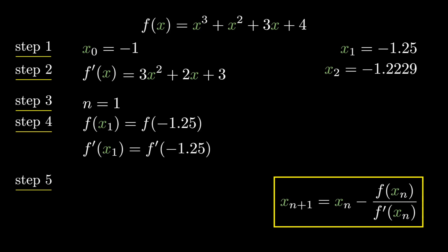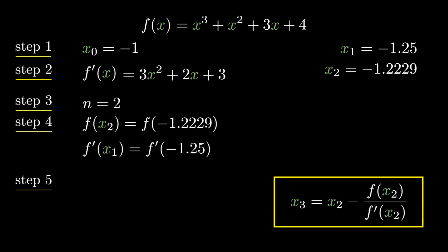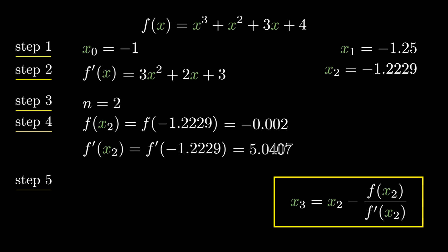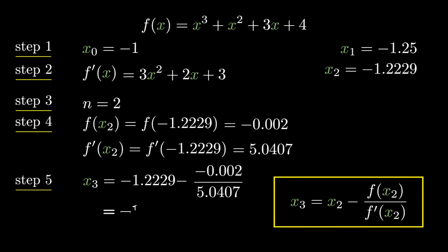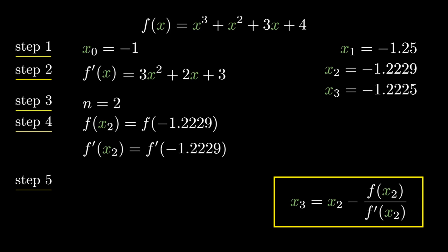We need to find x₃. Substituting n=2 in Newton-Raphson: x₃ = x₂ − f(x₂)/f'(x₂). f(x₂) = f(−1.2229) = −0.002, and f'(x₂) = f'(−1.2229) = 5.0407. We get x₃ = −1.2225. x₂ and x₃ are the same to three decimal places (−1.222), but we need four decimal place accuracy, so let's iterate once more.